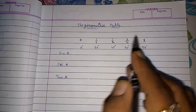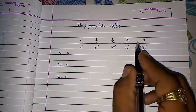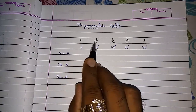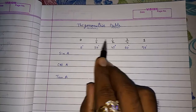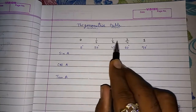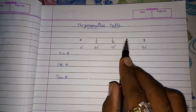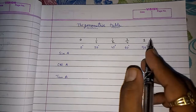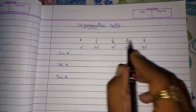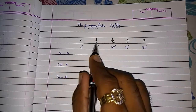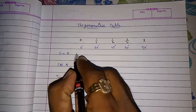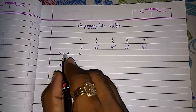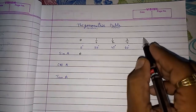To remember this, just keep adding 1/4 each time. Now we take the square root of each of these numbers. The square root of 0 is 0, so sine 0° = 0.